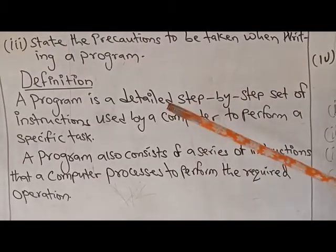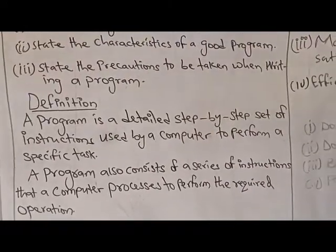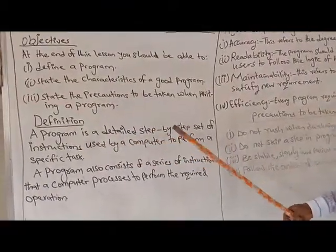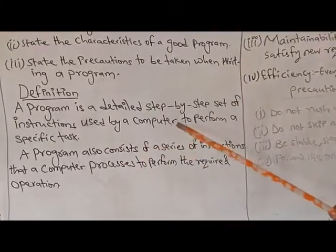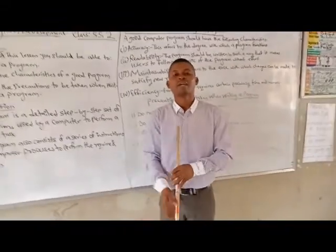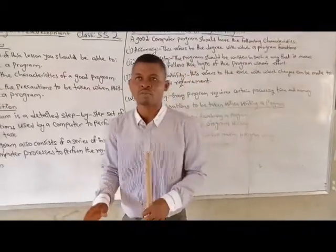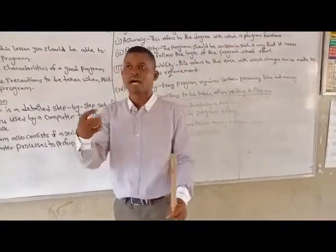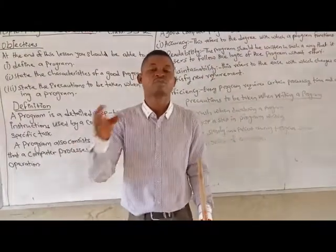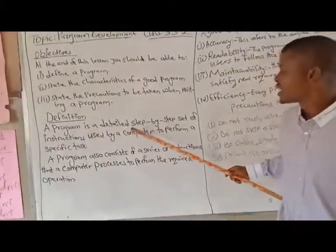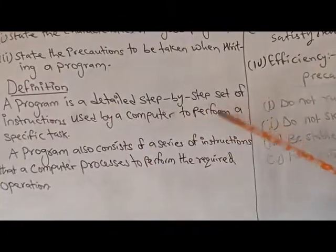Today we are going to look at program development. First of all, a program is defined as a detailed step-by-step set of instructions used by a computer to perform a specific task. For instance, a game program like Zuma is used only to play games — you will not be able to watch videos on YouTube. YouTube is there for you to watch videos. We have other programs like Road Rush where you learn how to drive; they perform a specific function.